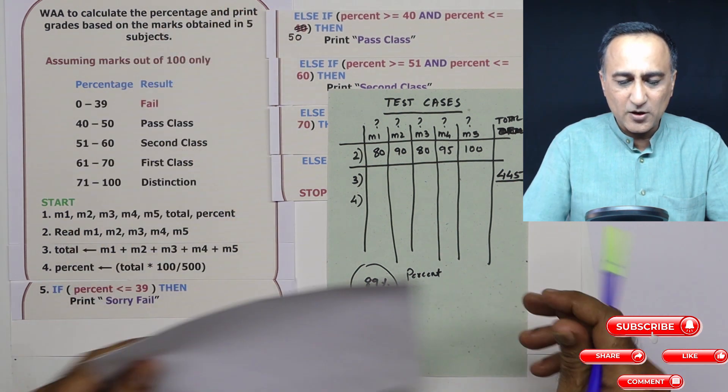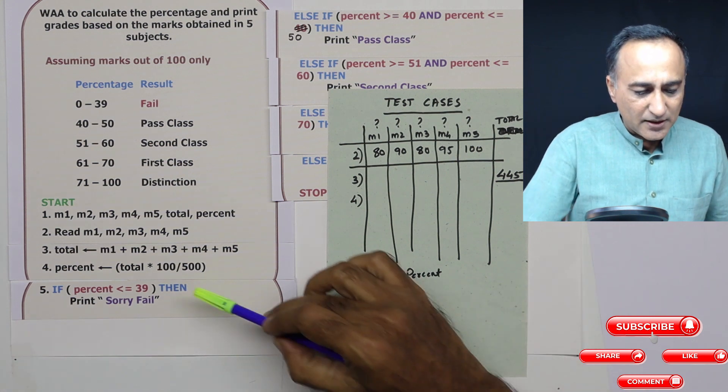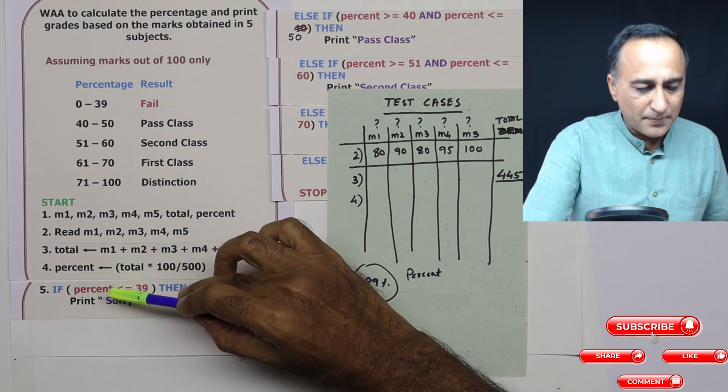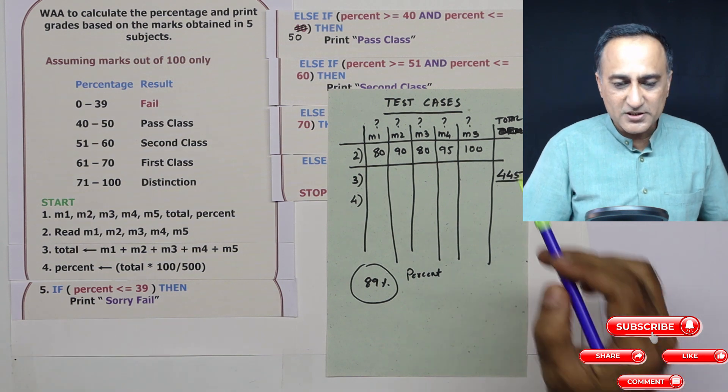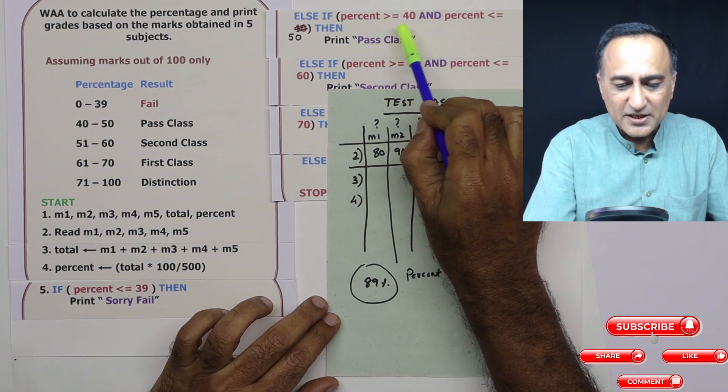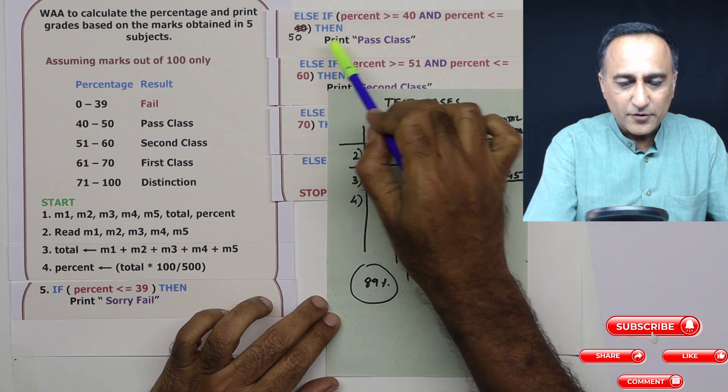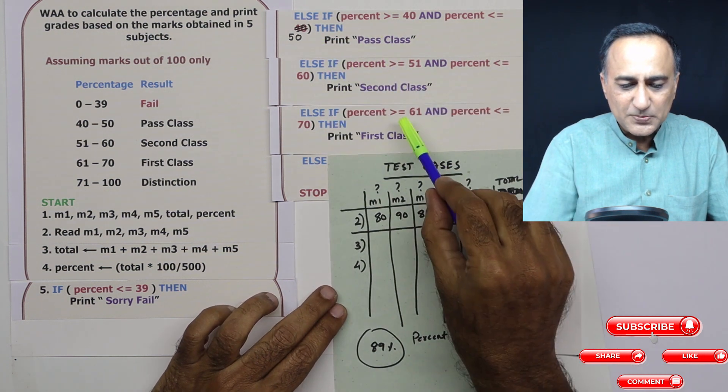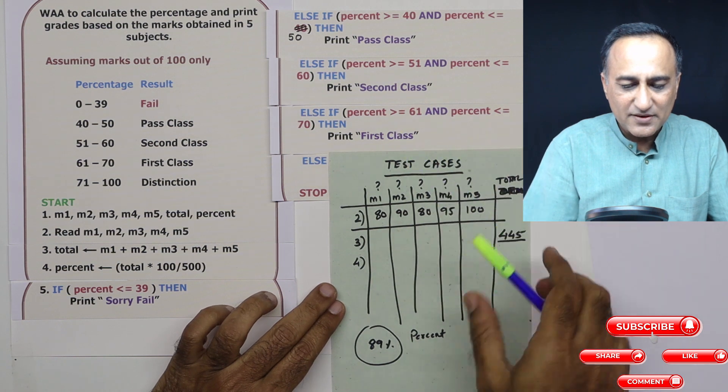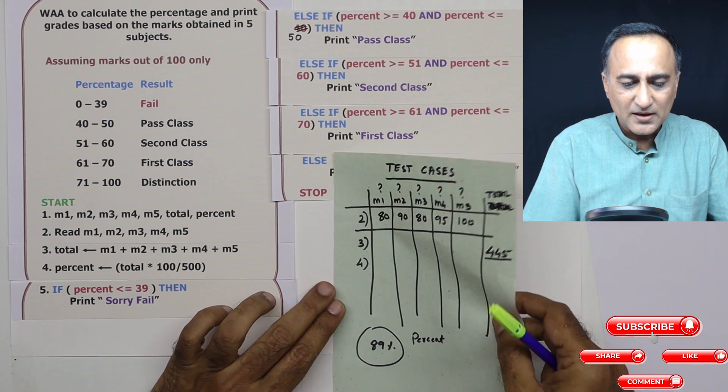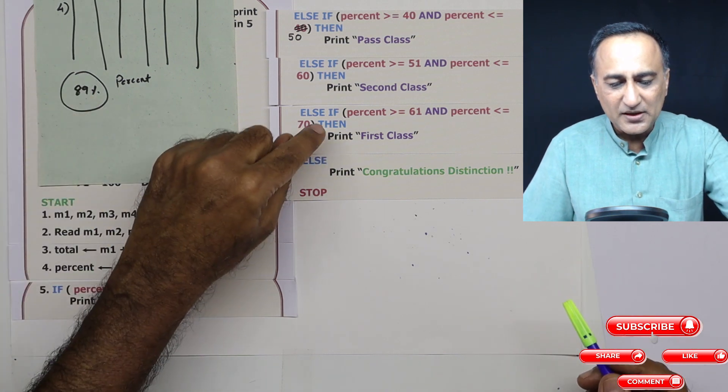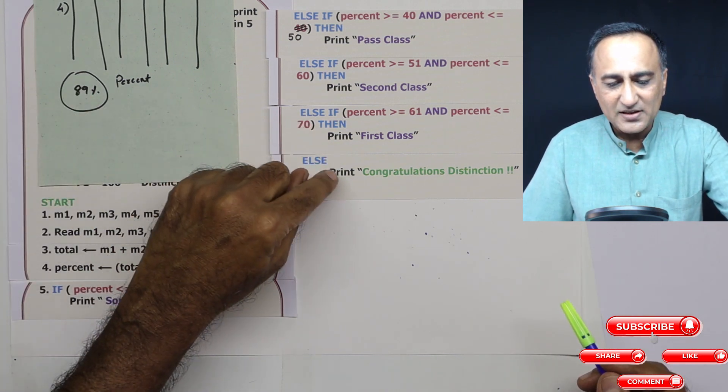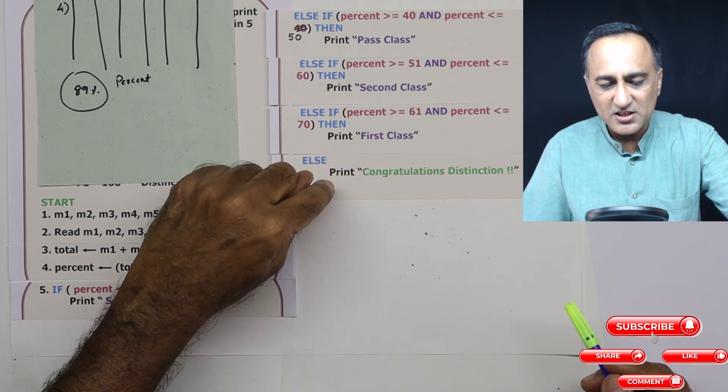So what I'm going to do here is now I am going to use this percent to compare. Is 89 less than 39? It is false. Is percent between 40 and 50? It is also false. Is percent between 61 and 70? That is also false. And if you look at percent, percent is 89, it is greater than 70. So I'll just print congratulations distinction and stop.